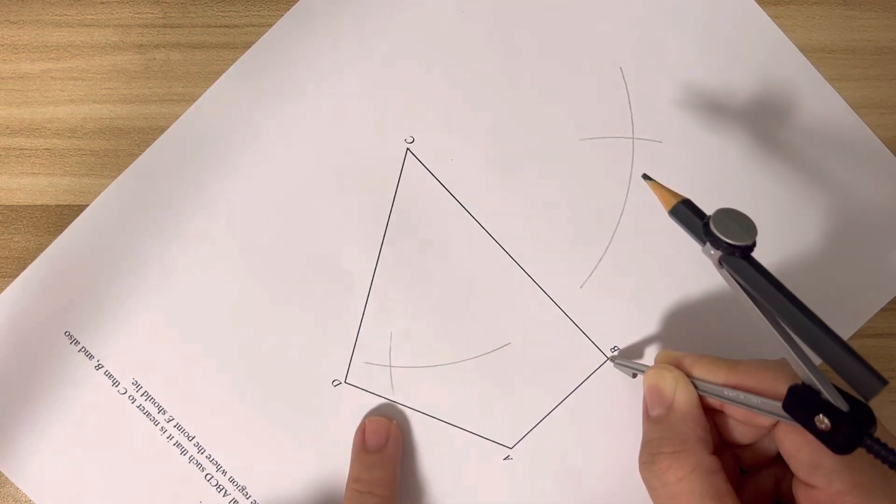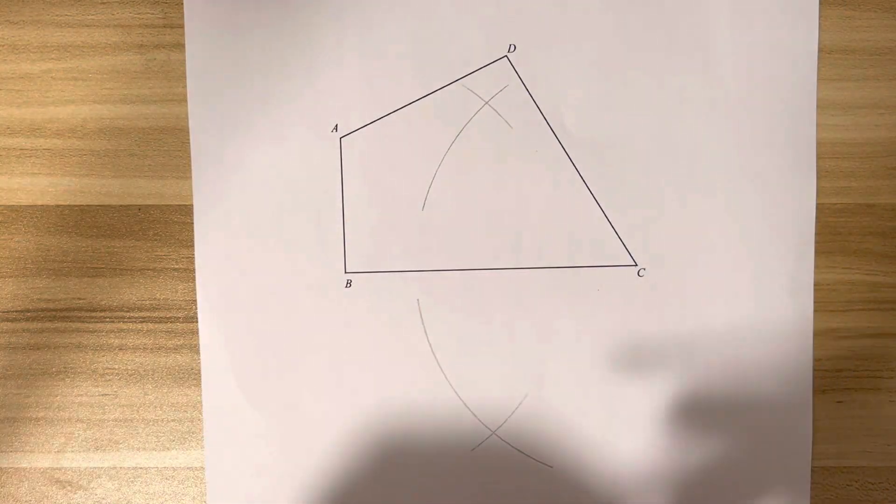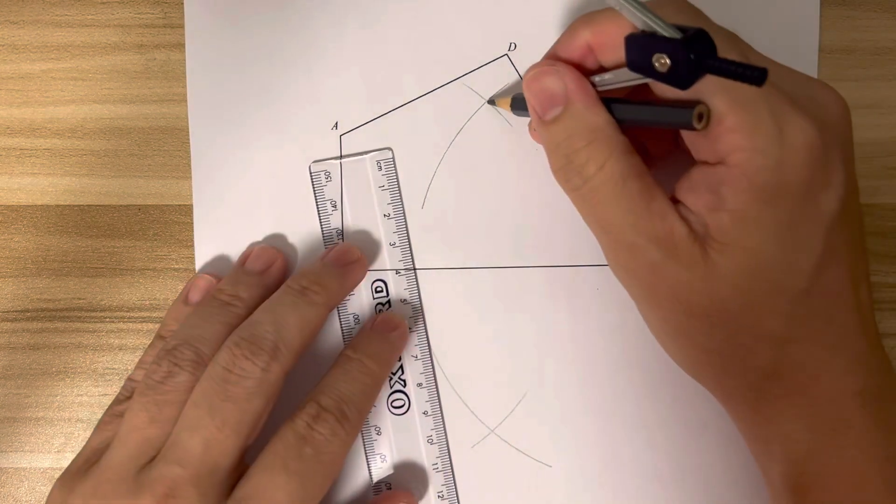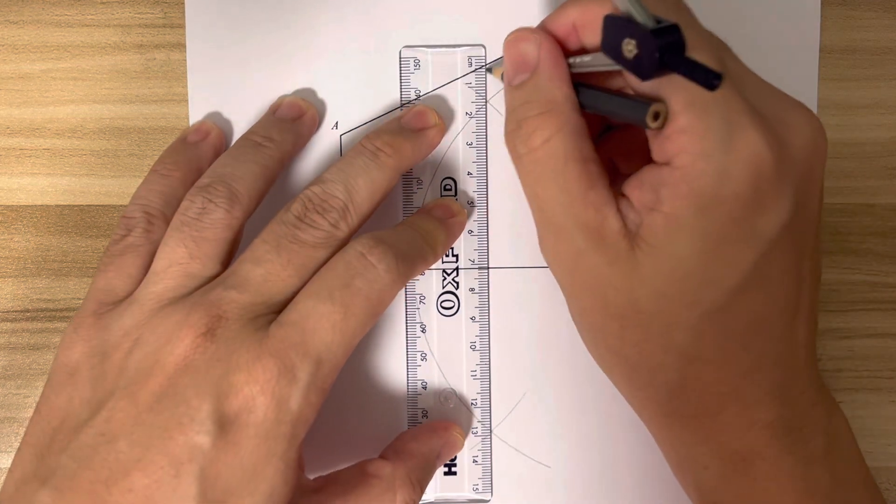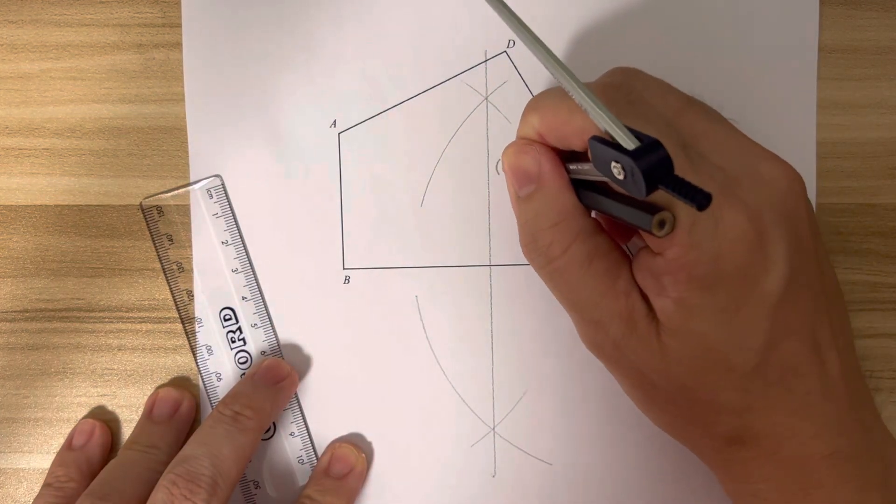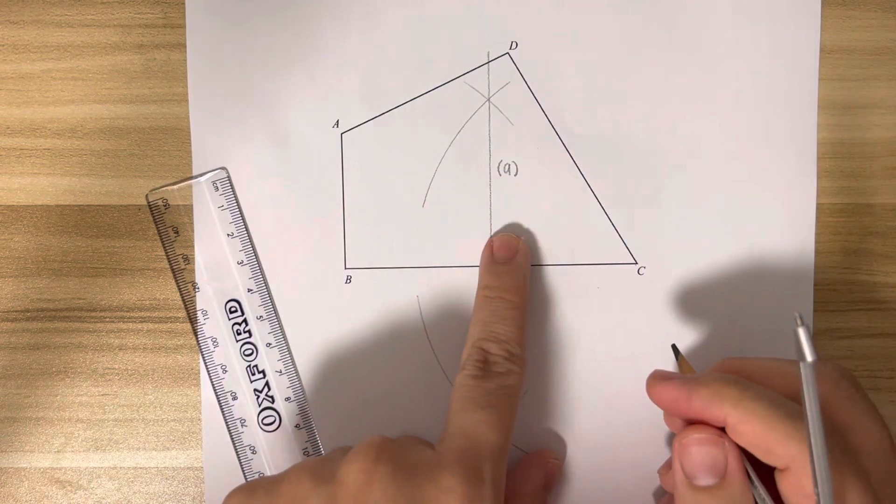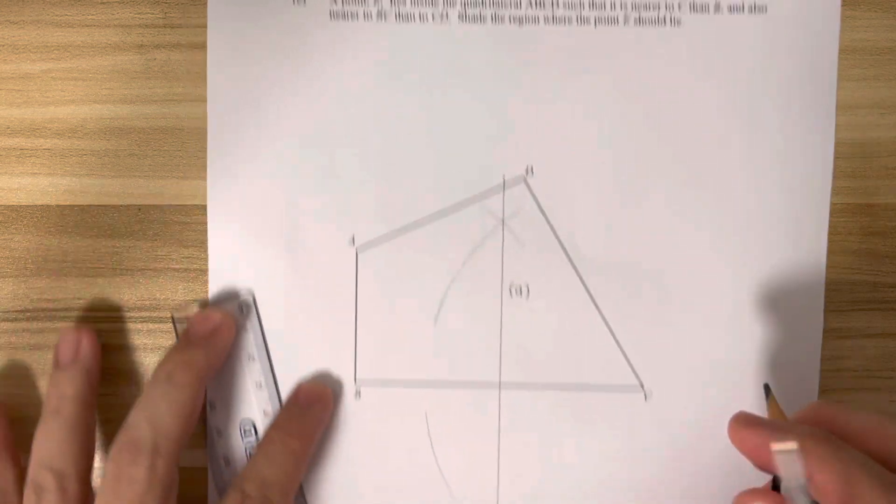The arc - there are two intersections. From here I could then join the intersection points with a ruler and label part A. This will be the perpendicular bisector of the line BC. So part A done.